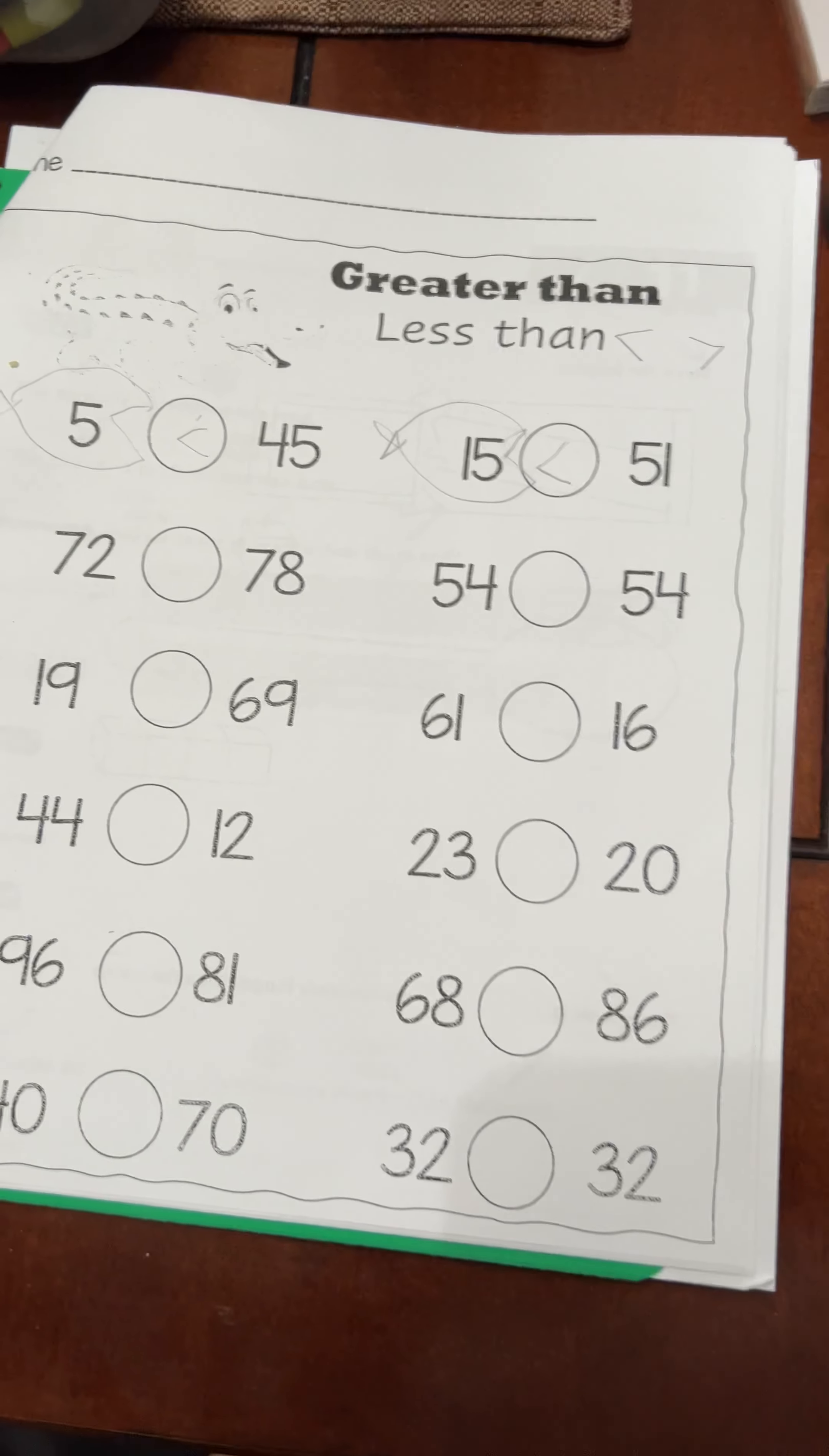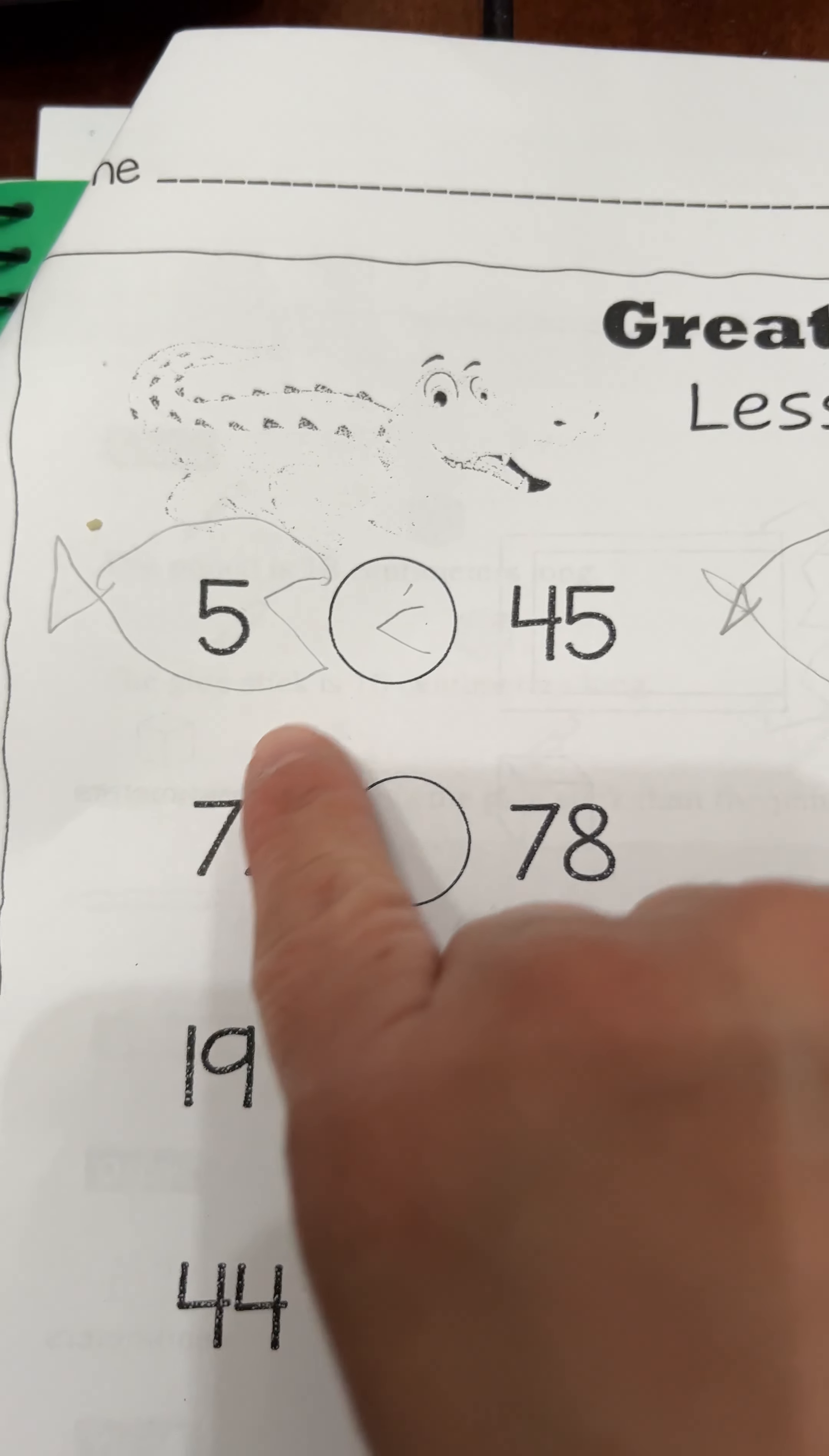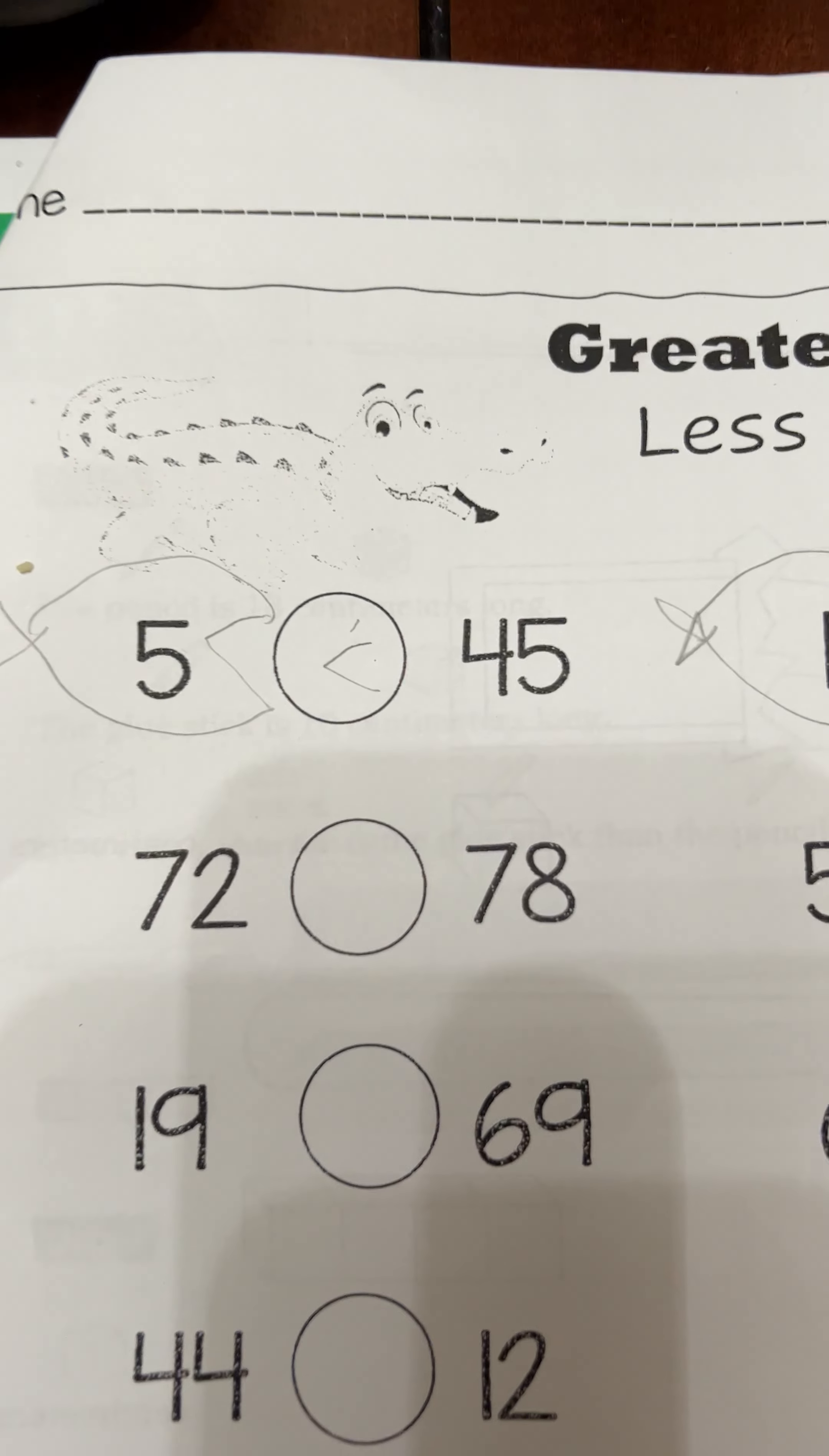Okay, so Eric was having trouble working on his greater than or less than homework, and I tried showing him this little fish here. The fish eats the smaller number, and so that's why he'll know what direction the mouth is pointing.